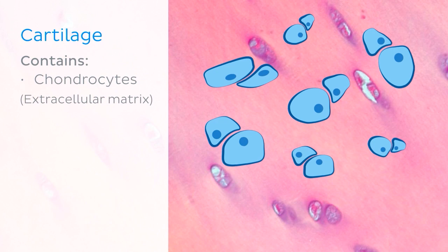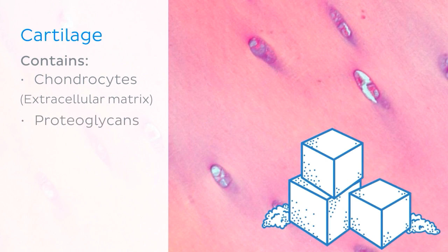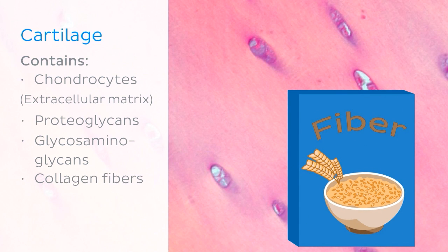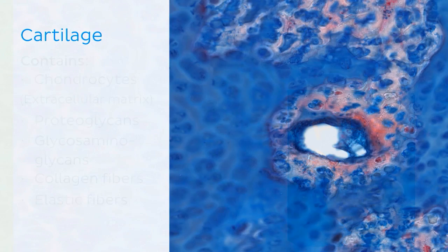It also contains protein-sugar complexes known as proteoglycans and glycosaminoglycans. Fibers present in cartilage tissue include collagen fibers and elastic fibers, which contribute to the flexibility properties of this tissue.